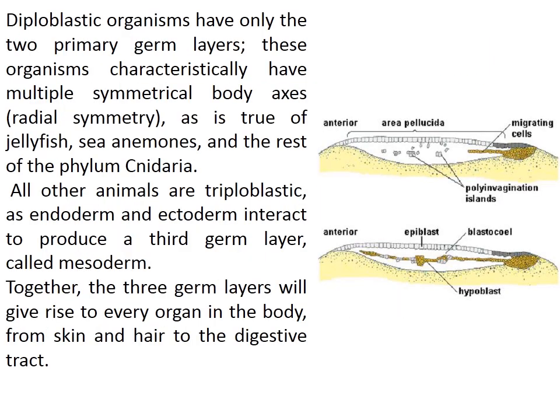Diploblastic organisms have only the two primary germ layers and characteristically exhibit radial symmetry, as seen in jellyfish, sea anemones, and other members of phylum Cnidaria. All other animals are triploblastic, as endoderm and ectoderm interact to produce a third germ layer, mesoderm. Together, the three germ layers give rise to every organ in the body.